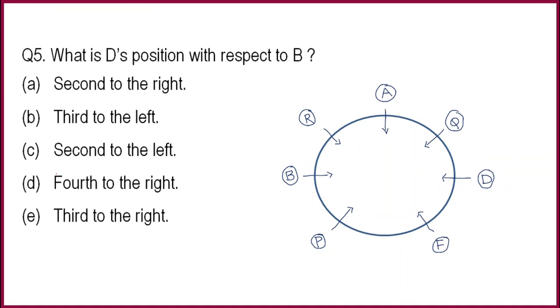Next is: What is D's position with respect to B? In questions, you have to give attention that you can ask from both sides. See, if we see right from B, when you see one, two, three, when we see D from B to the right, the third right is D's position. And if we see left from B, one, two, three, four. Here you can see second to the right, no. Third to the left, no. Third to the right. So this is the correct answer.